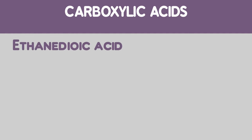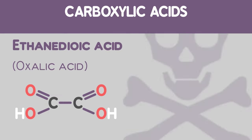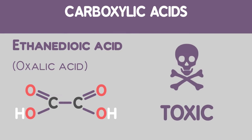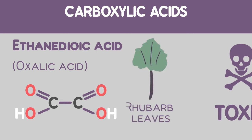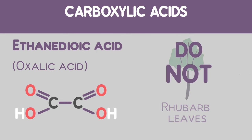Ethanedioic acid, commonly called oxalic acid, is toxic and is found in rhubarb leaves, and that is why we should never eat them.